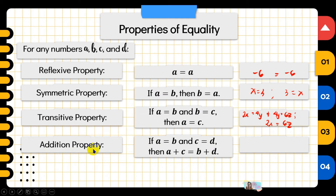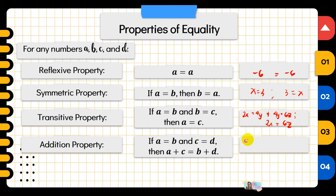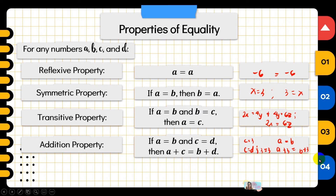Next is the addition property of equality. Once we add something to the left side of an equation, we must add the same to the other side. If A equals B and C equals D, then A plus C equals B plus D. If C equals 3, then D also equals 3, so A plus 3 equals B plus 3. Whatever you add to one side of the equation, you add the same to the other side.